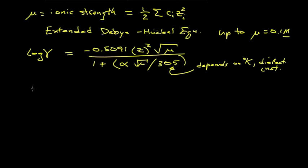When things get higher than that, up to about 0.6 molar, a better model that seems to fit the data is something called the modified Davies equation.